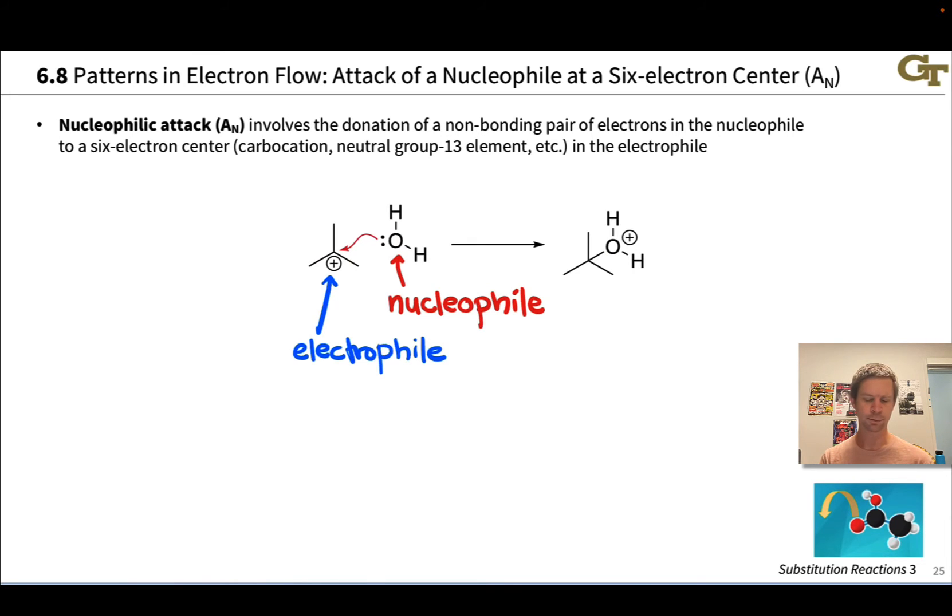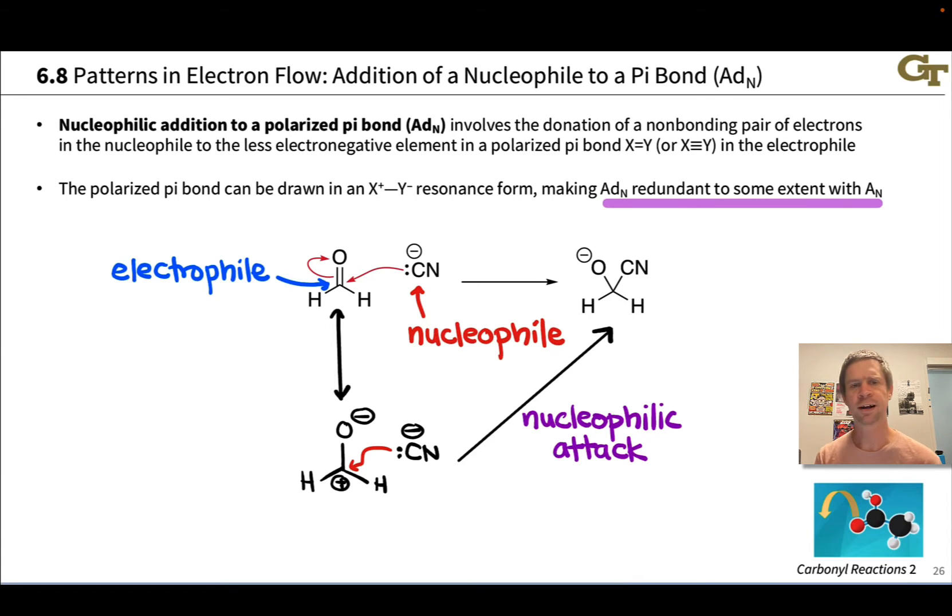Now nucleophilic attack can also happen to groups that are involved in pi bonds, and I wanted to highlight that on this slide. Technically speaking, if we just look at what's here, this corresponds to what we'll call nucleophilic addition to a polarized pi bond. The CO double bond is polarized toward oxygen, and the cyanide anion is donating a pair of electrons to the carbon as the CO pi electrons are moving up to oxygen. But of course, thinking in resonance terms, we could have pushed the CO pi electrons up to oxygen initially, generating this structure. If we focus on what this looks like, this actually looks like nucleophilic attack—carbocation, a lone pair, a bond forming via the lone pair being donated to the carbocation. So on some level, this nucleophilic addition to a polarized pi bond is redundant with nucleophilic attack, and this is a point you'll return to in organic chemistry 2.